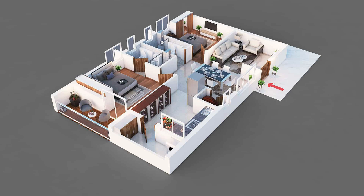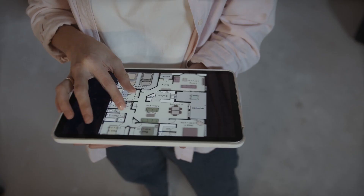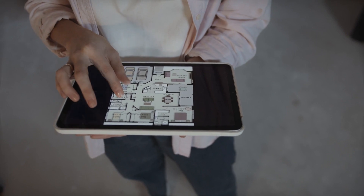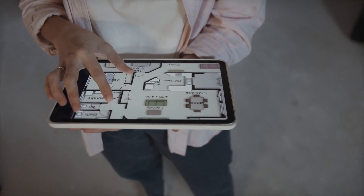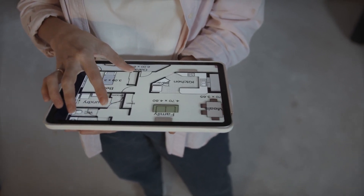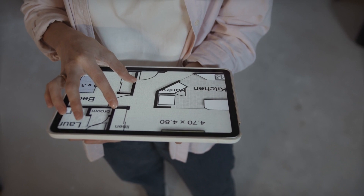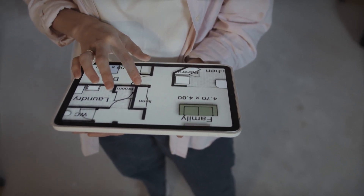So what exactly is 3D power plant rendering? It is the process of transforming traditional 2D plans into realistic and immersive 3D representations. By utilizing advanced rendering techniques and software, architects and designers can bring power plants to life, allowing viewers to visualize the space in a more detailed and engaging way.